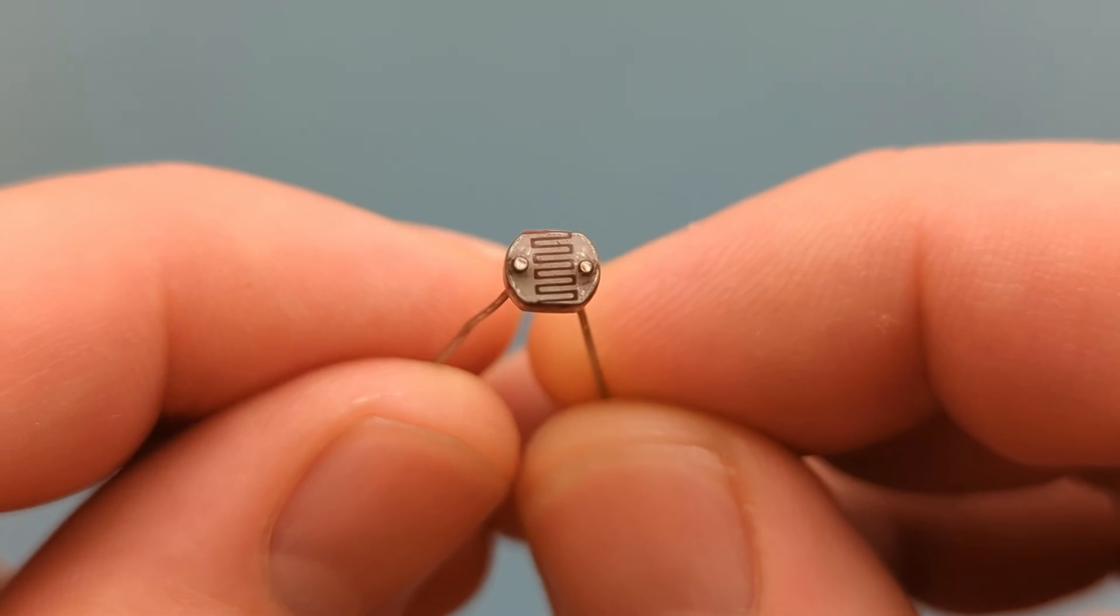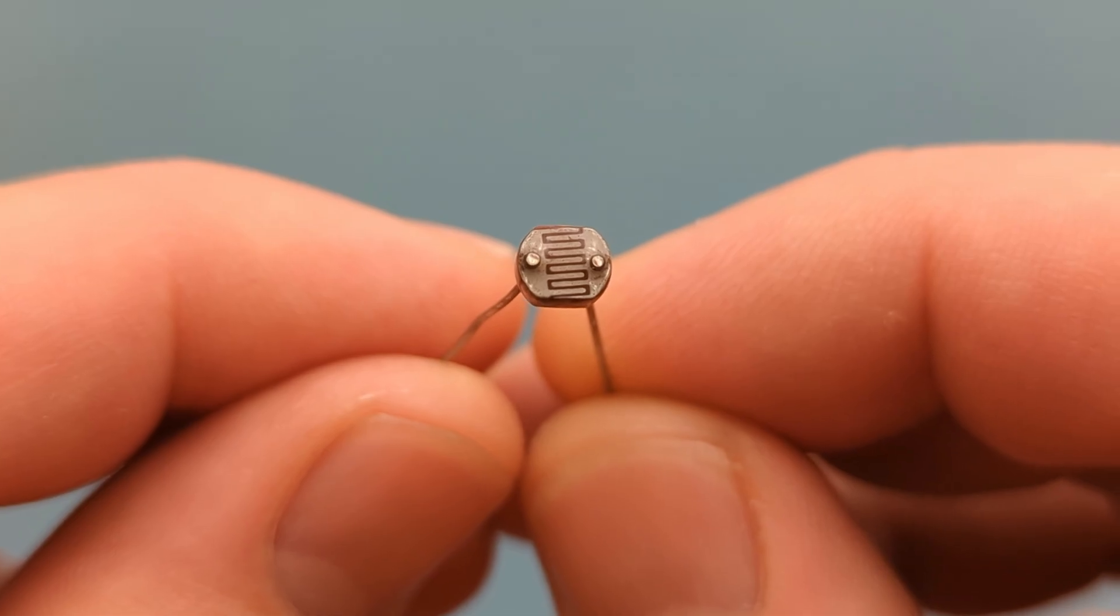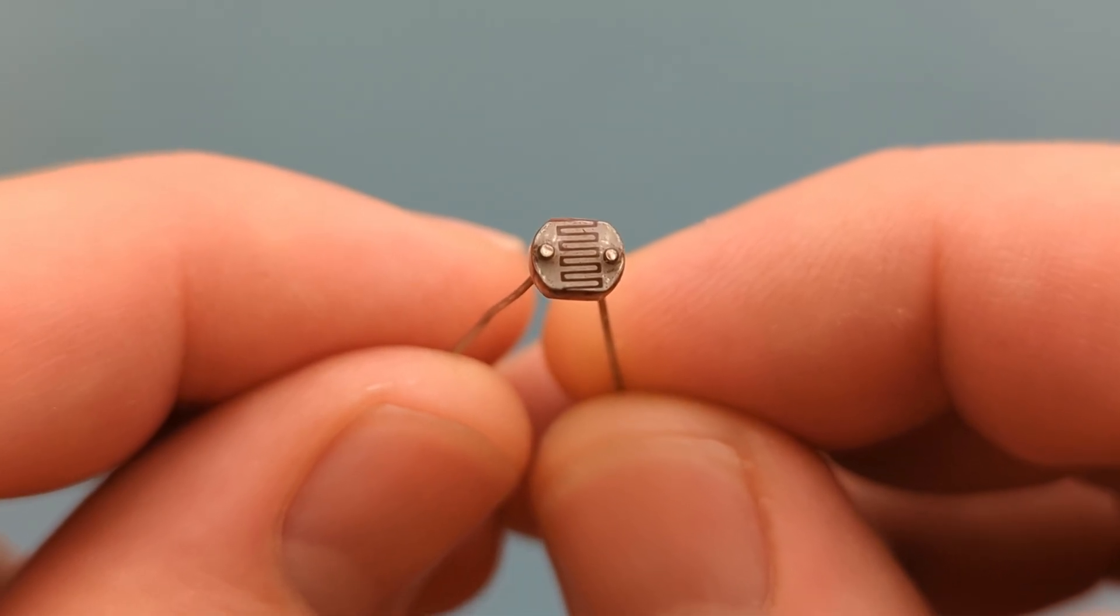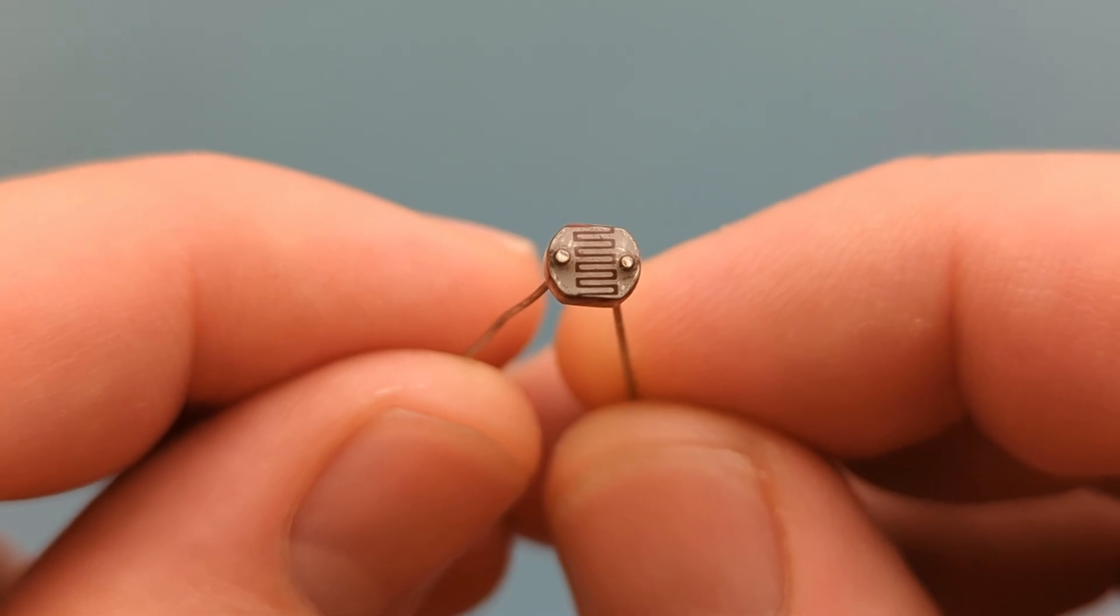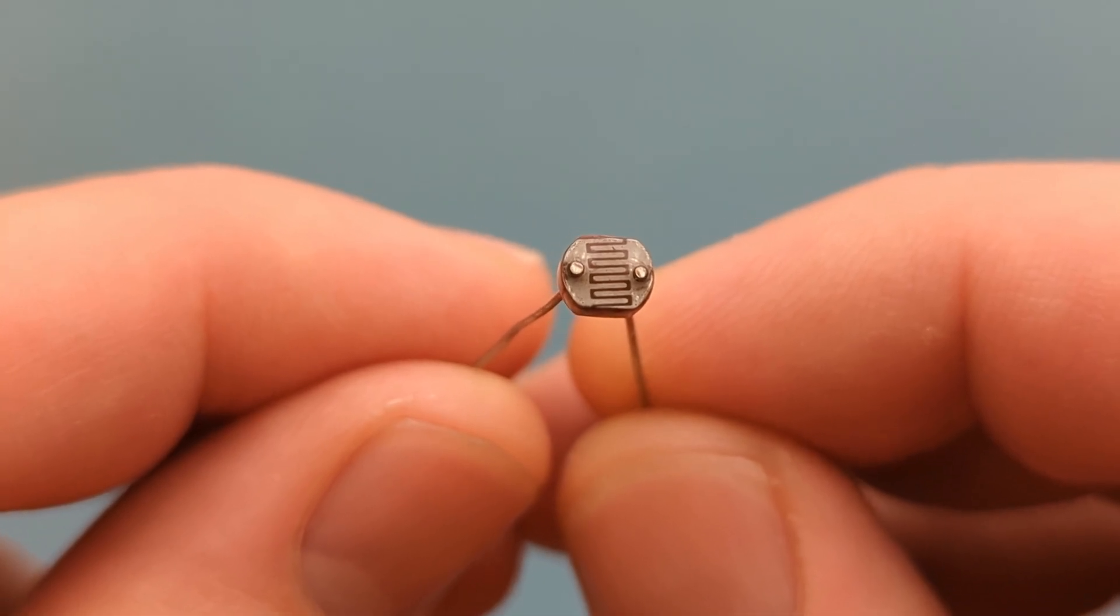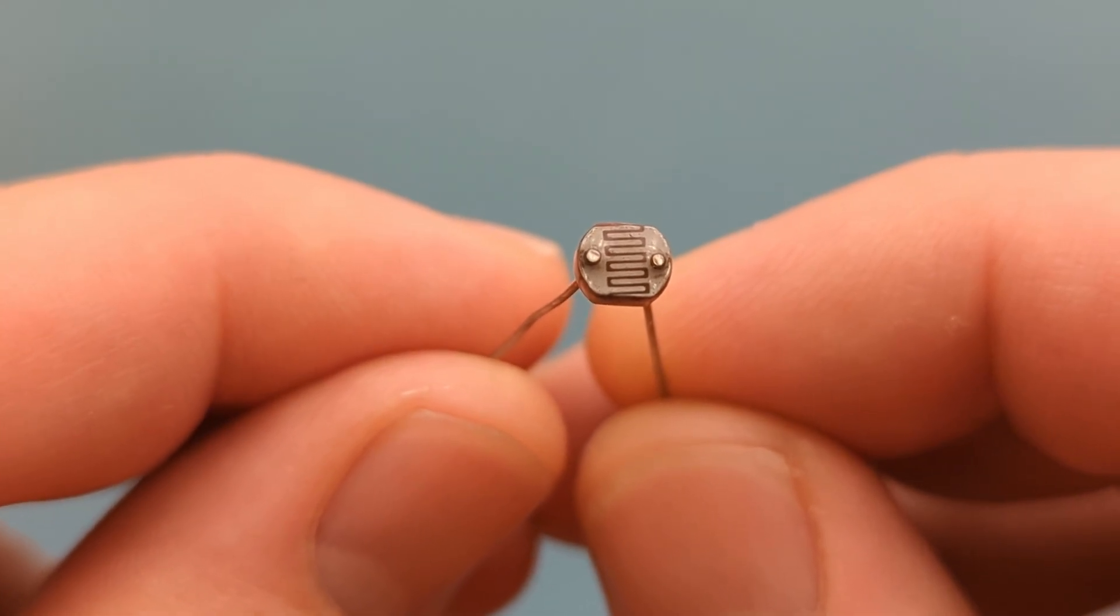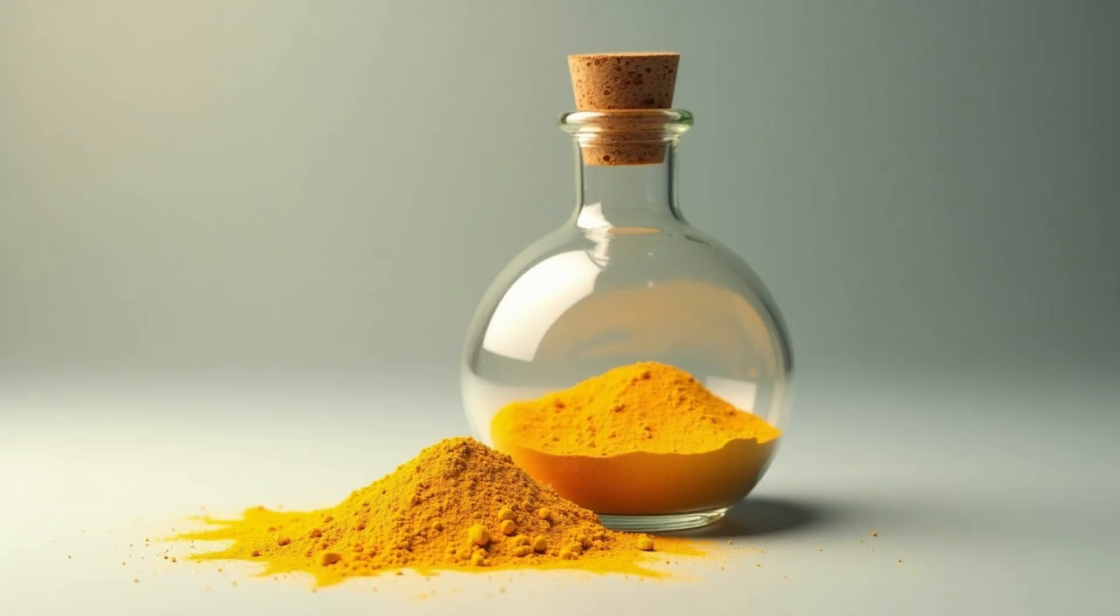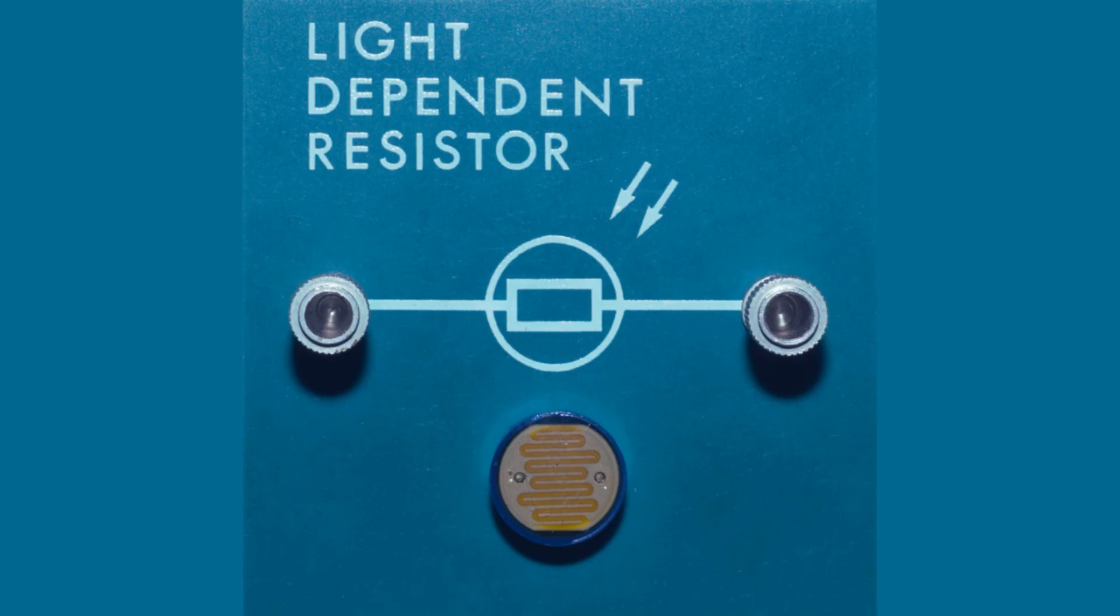It works by using an LDR or light dependent resistor in combination with a 10,000 ohm resistor to form a voltage divider that senses the surrounding light. An LDR is a special type of resistor that changes its resistance in response to the amount of light falling on it. It's also called a photoresistor. The key idea is simple. Its resistance decreases when light increases, and its resistance increases when it's dark. The LDR is made from a material like cadmium sulfide, which is sensitive to light. In bright light, the material becomes more conductive, so the resistance drops, sometimes to just a few hundred ohms.